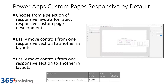This will start by choosing a selection of responsive layouts when you build the custom page, and then you'll be able to easily move controls between one responsive section and another. This is a great feature addition — as you build applications including both model-driven and canvas assets, users don't have to compromise on responsiveness when they hit one of the custom pages. This will be coming to public preview in October of 2022.